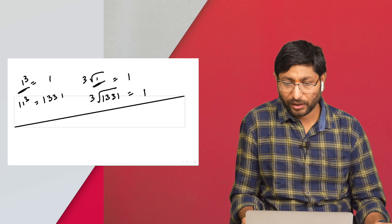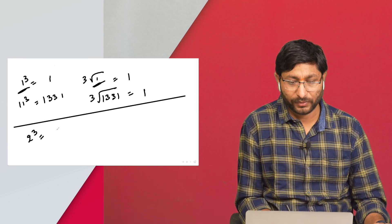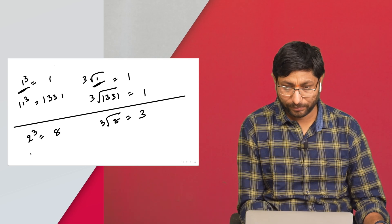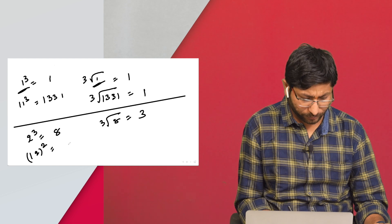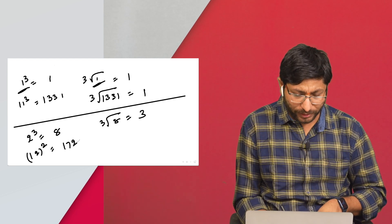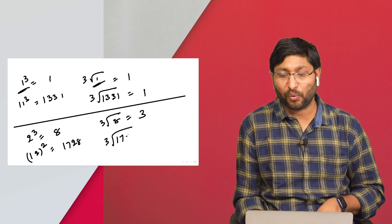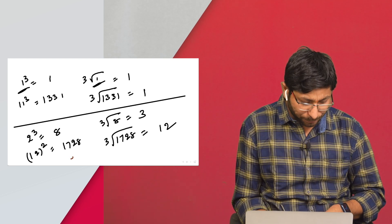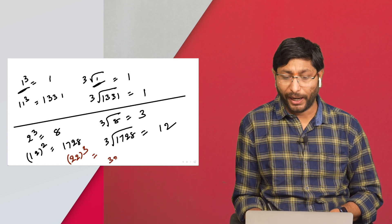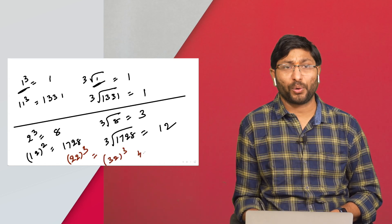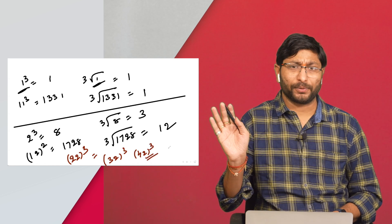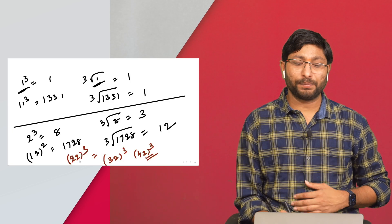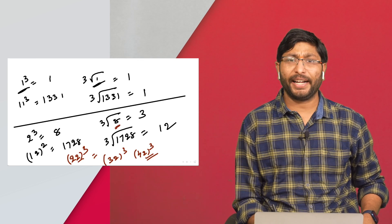Another example: 2³=8, so cube root of 8 is 2. And 12³=1728, so cube root of 1728 is 12. You can check 22³, 32³, 42³ on your own. The pattern is clear: if the cube is ending with 2, the cube root is ending with 8. So cube ending with 2 → cube root ending with 8.